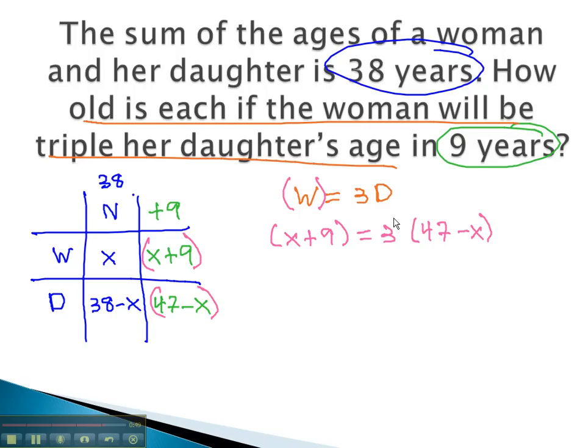We can solve this equation by distributing. x plus 9 equals 141 minus 3x.